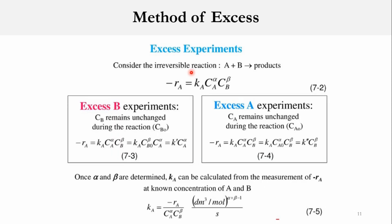Now let us assume an irreversible reaction where A plus B goes to products. The rate of reaction or kinetic equation can be written as: minus R_A equals K_A times C_A raised to power alpha times C_B raised to power beta, where alpha and beta are the respective reaction orders for each species, and alpha plus beta gives the overall order of the reaction.